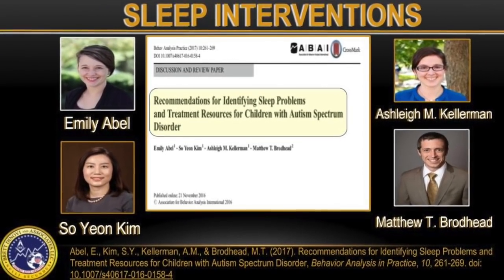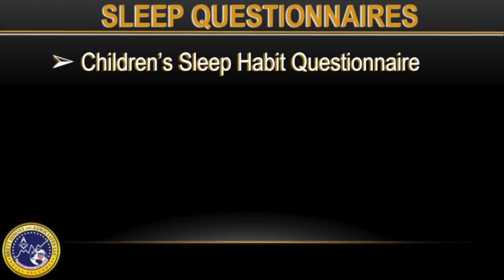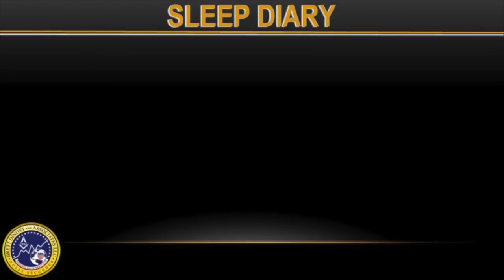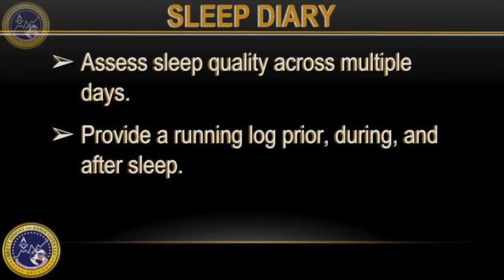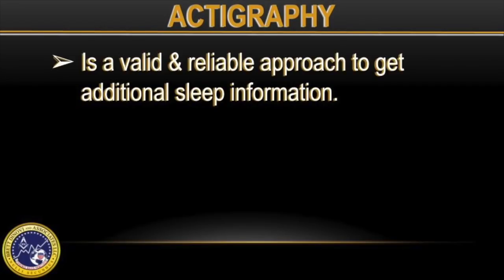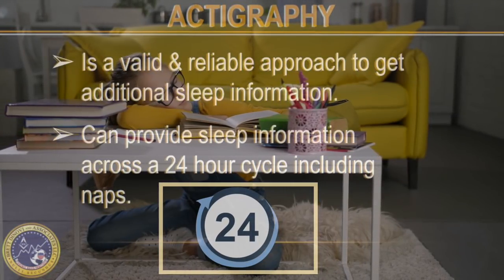The first step is identifying the core issue. The authors talk about various ways to assess sleep problems in children with ASD. One is sleep questionnaires. Three commonly used ones are the Children's Sleep Habits Questionnaire, the Family Inventory of Sleep Habits — also called the FISH — and the Albany Sleep Problem Scale, which I have personally used. Other methods include sleep diaries, which can track sleep quality across multiple days and provide a running log of what's happening prior to, during, and after sleep. Actigraphy is also a valid and reliable approach, providing sleep information across a 24-hour cycle, including naps.